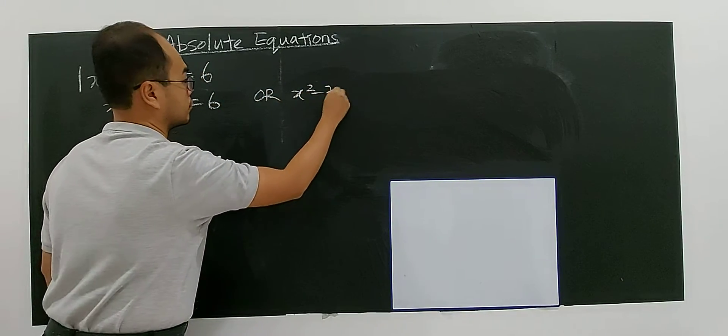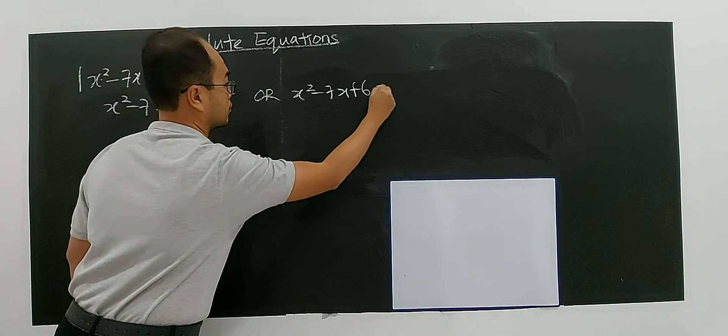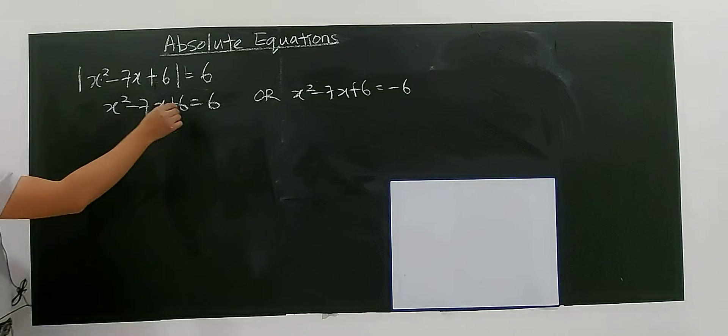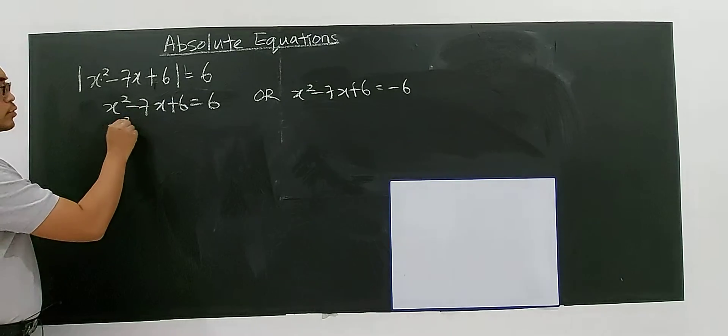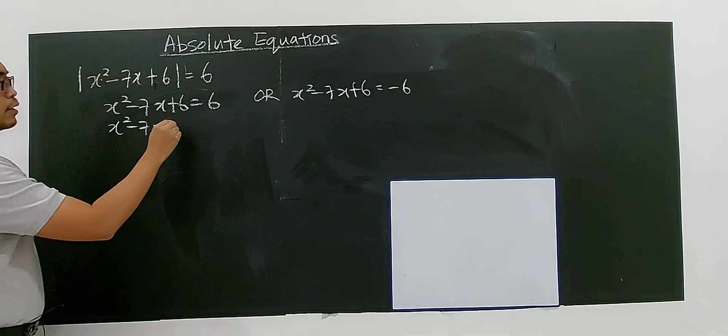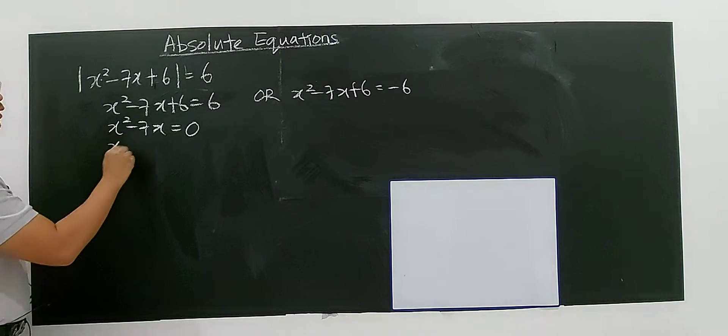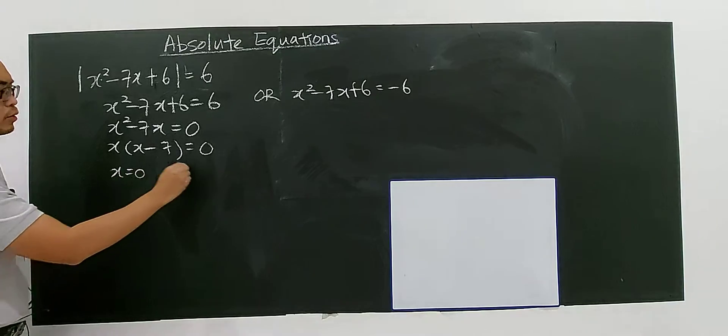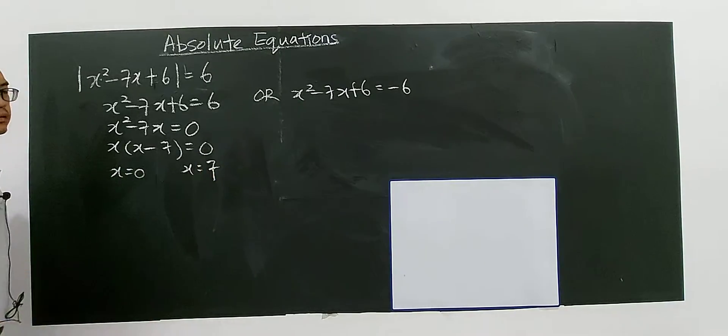Let's solve this quadratic. You have x² - 7x = 0, then you have x(x - 7) = 0, which gives you x = 0 or x = 7.